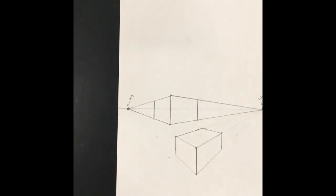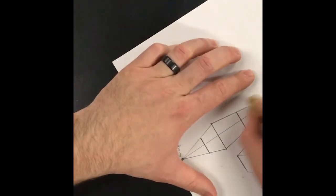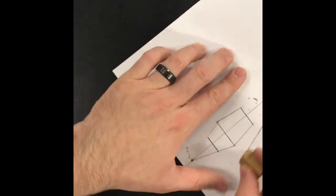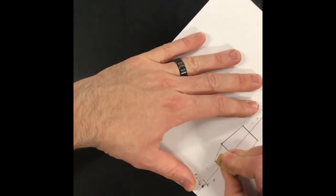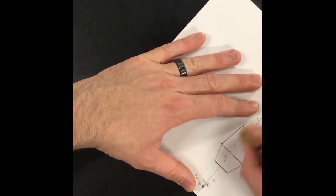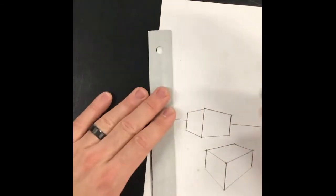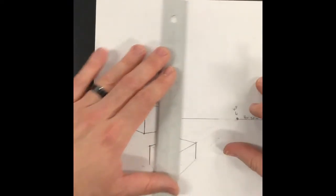Now as you get more adept at this, you won't have to draw your converging lines all the way to the vanishing point. In the beginning though, it helps you to do that because it helps you make sure to line up with the actual dot. I'll show you how you don't have to go all the way with this last one.